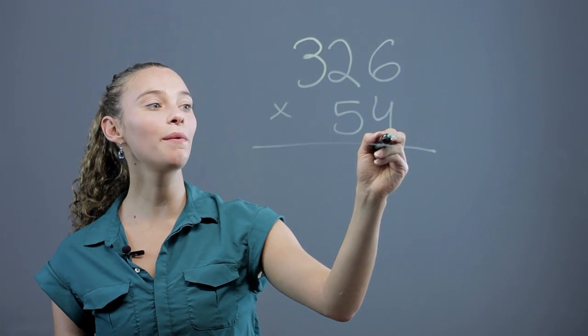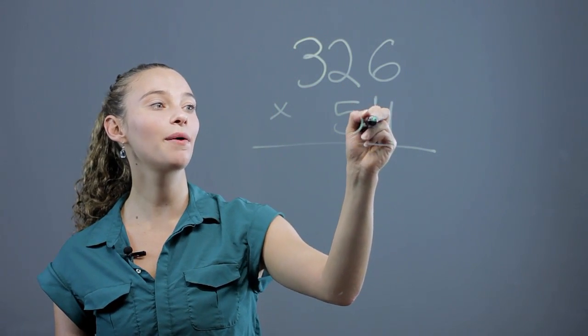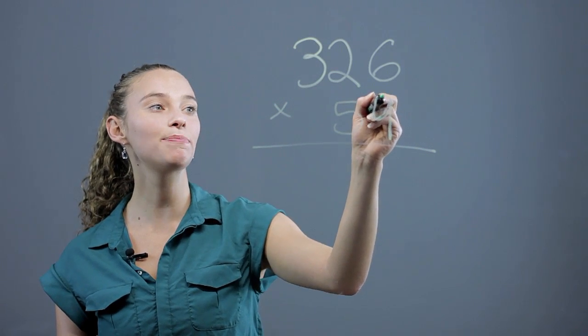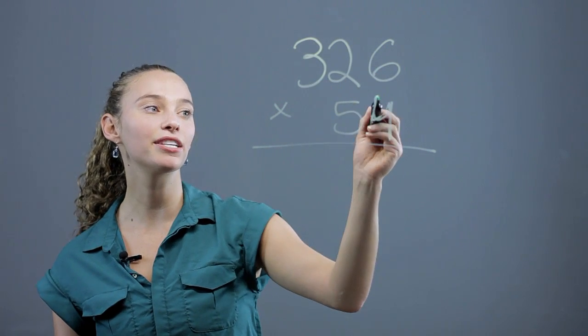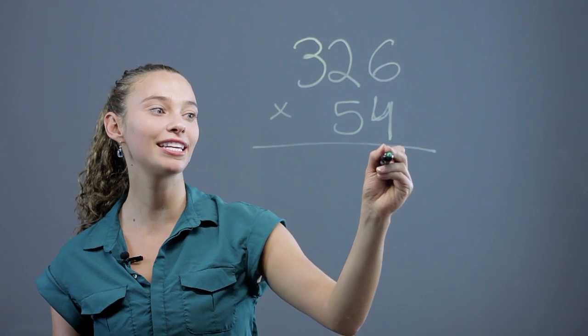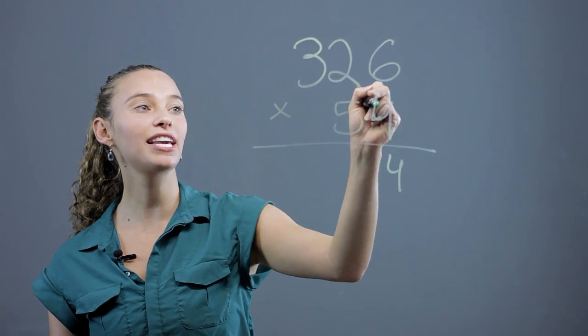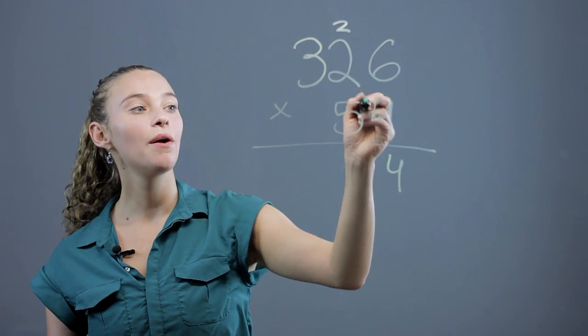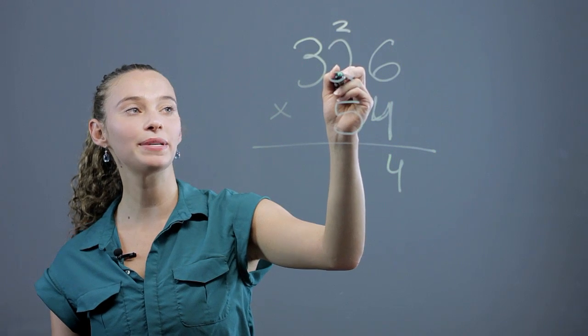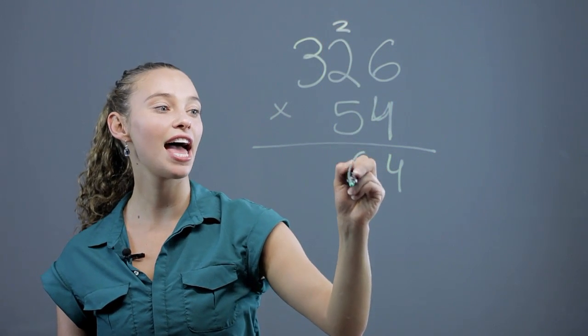Now we start with the ones digit, the bottom number, and multiply it by all three numbers. We start with 4 times 6 to get 24, and carry the 2. We do 4 times 2 is 8, add the 2 to get 10.